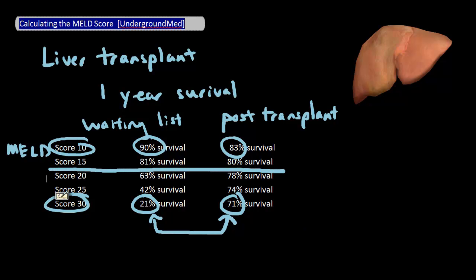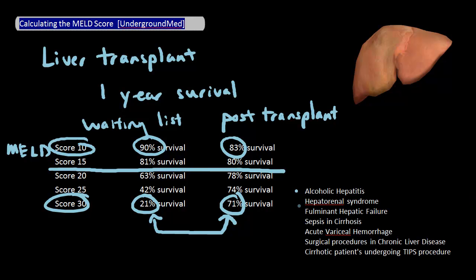Lastly, while the most prominent role of the MELD score is for use in liver transplantation prioritization, the MELD score has uses in a variety of other settings. These include alcoholic hepatitis, hepatorenal syndrome, fulminant hepatic failure, sepsis in cirrhotic patients, acute variceal hemorrhage, surgical procedures in chronic liver disease, and of course, cirrhotic patients undergoing TIPS procedure.